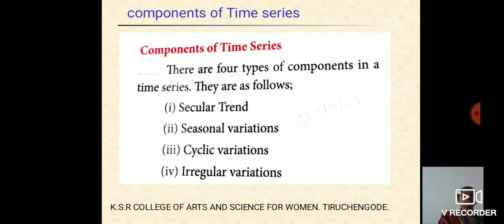Here, see the components of time series. The components of time series has four types: first one is secular trend, seasonal variations, cyclic variations, and irregular variations.